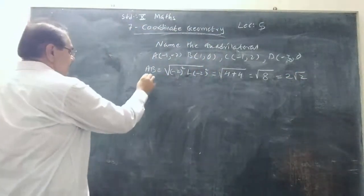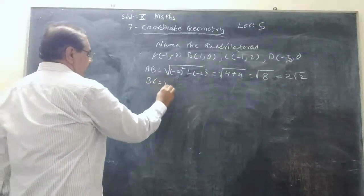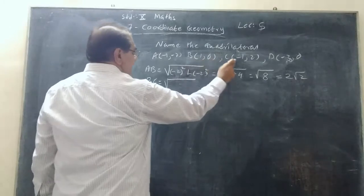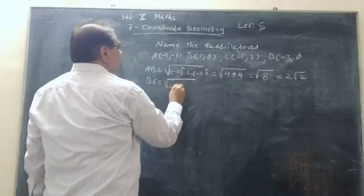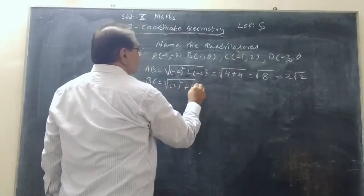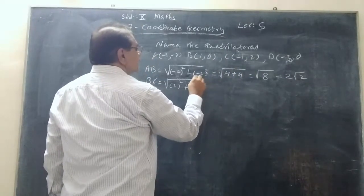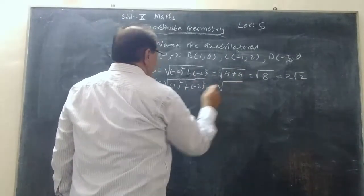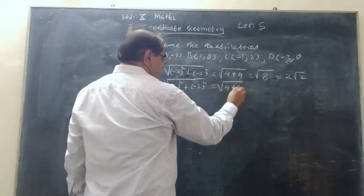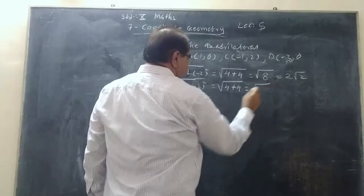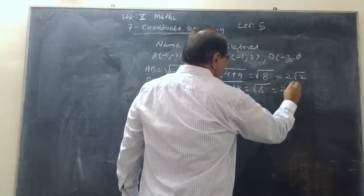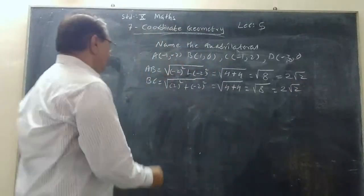Same, BC: distance formula. √[(1-(-1))² + (0-2)²] = √[2² + (-2)²] = √[4+4] = √8 = 2√2.